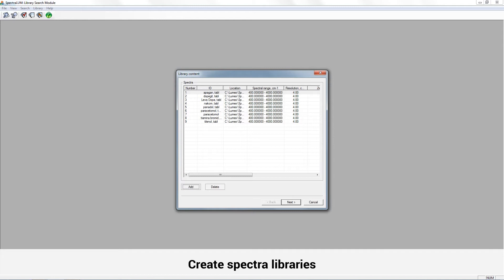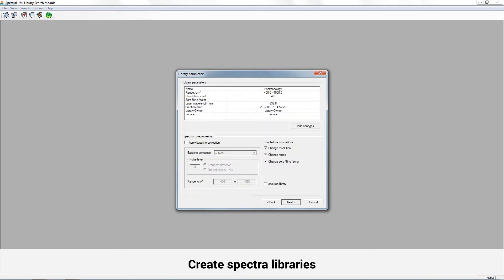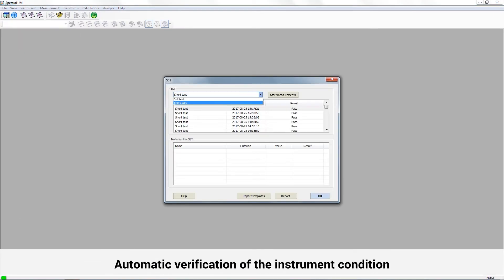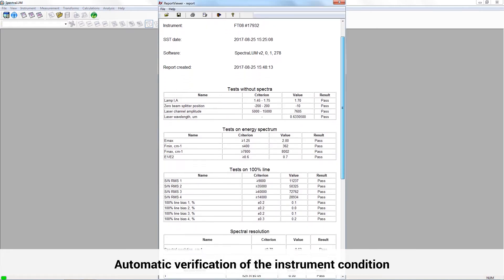For identification of a sample spectrum, you can connect to an existing spectra library or create your own based on a variety of file formats. Also, the software allows automatic verification of main instrument parameters and formation of a verification protocol.